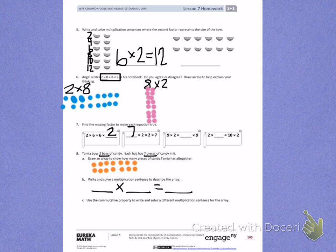Letter C. Use the commutative property to write and solve a different multiplication sentence for the array. Use those factors, switching the groups and the size, to write a second multiplication problem.